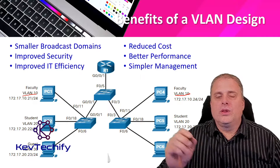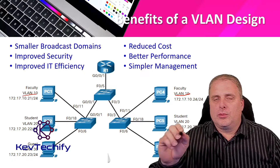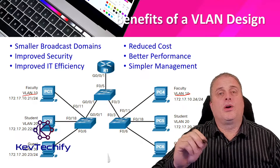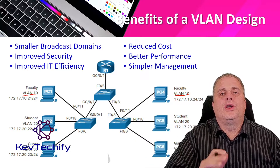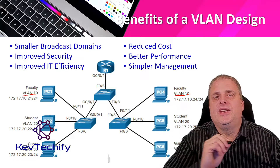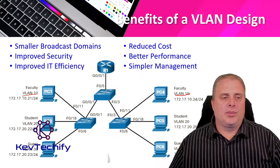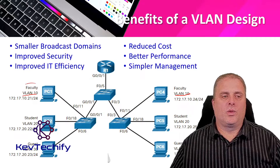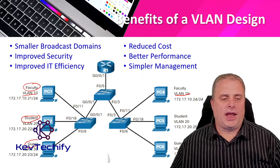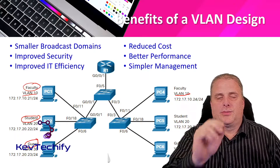We have improved security — only users in the same VLAN are able to communicate together. PC1 is only able to communicate with PC4, and PC1 cannot reach PC2, 3, 5, or 6 without going through a router, where you typically have some form of security. We also have improved IT efficiency — VLANs allow us to group devices together with similar requirements. In the example, faculty have one set of requirements, students have another, and the guest network has yet another, so you can group devices based on those security requirements.